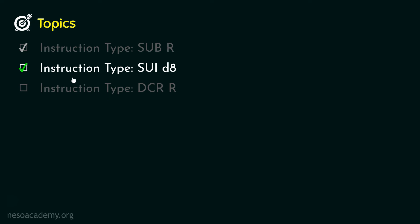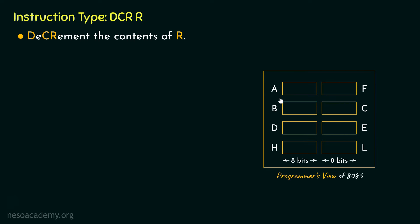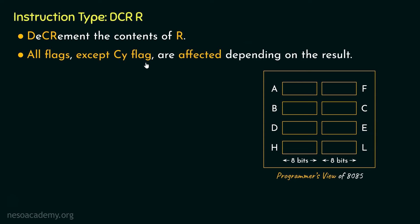That is all about the instruction type SUI D8 — it falls under the 2-byte-long instructions category with only a single instruction, sending the subtrahend in immediate addressing mode. Now let's focus on the last instruction type of this session: DCRR. DCRR stands for decrement the contents of R, covering the accumulator, all GPRs, and the memory element pointed by the HL register pair. All flags except the carry flag (CY) are affected depending on the result. This instruction also falls under 1-byte-long instructions.